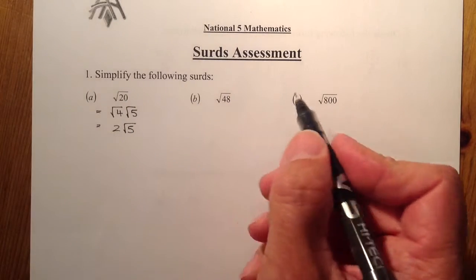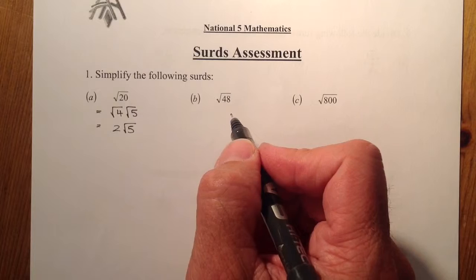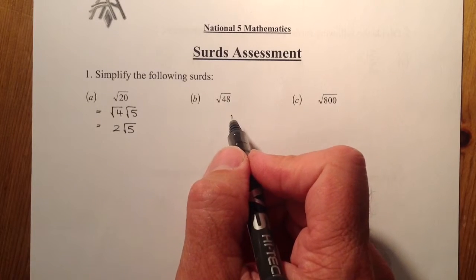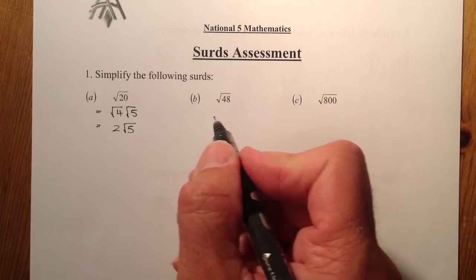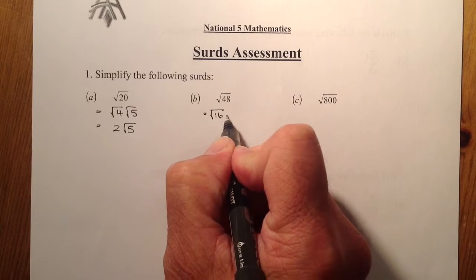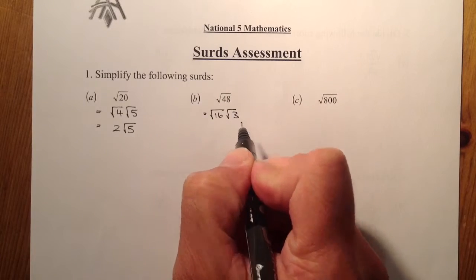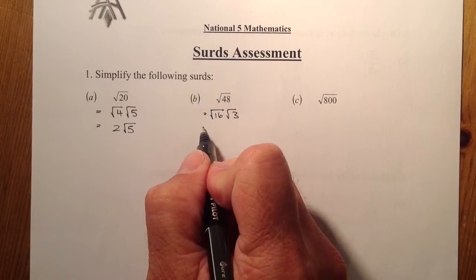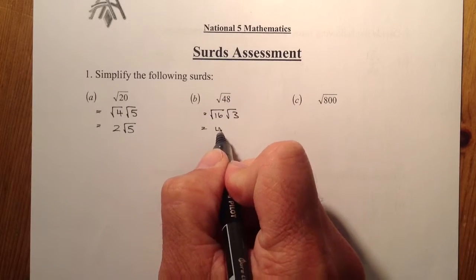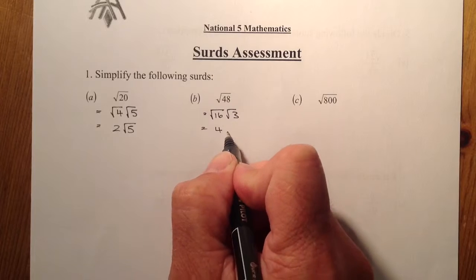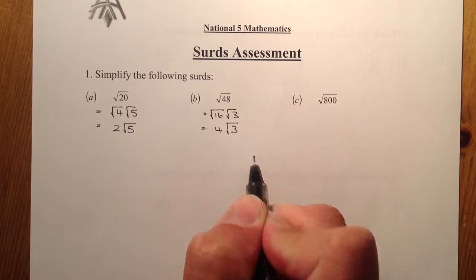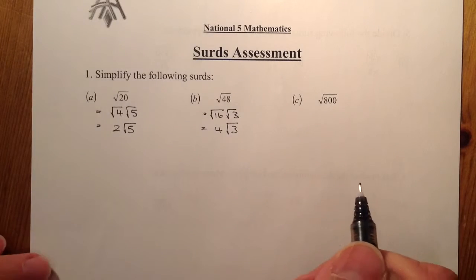Root 48 — I could break that down into 4 and 12, but the best one to use would be root 16 and root 3. From root 16, I'm going to get 4, and I've got root 3 left, and that's it simplified fully: 4 root 3.